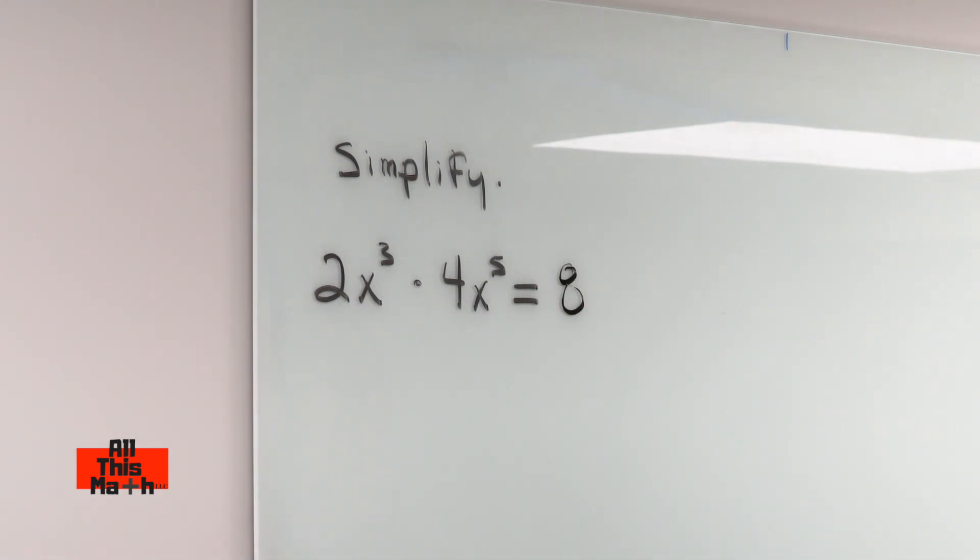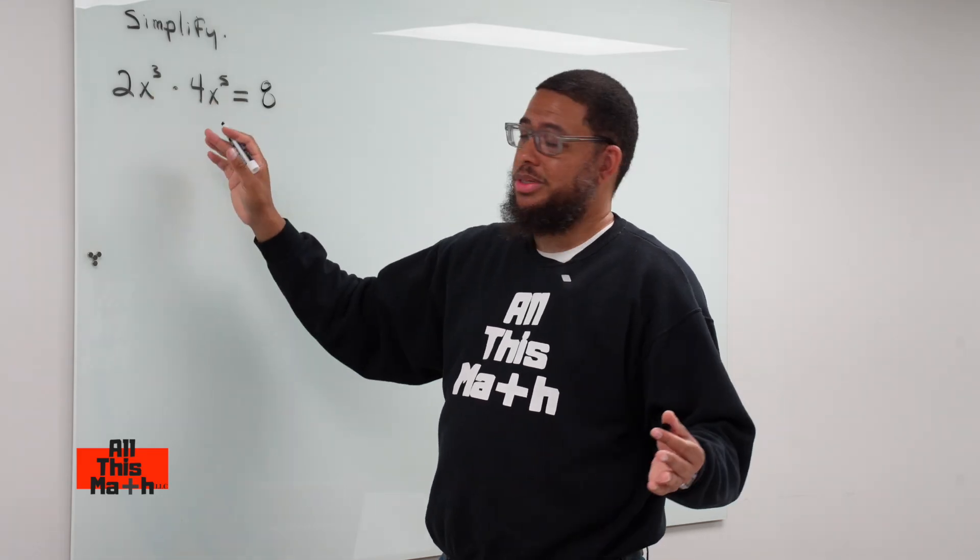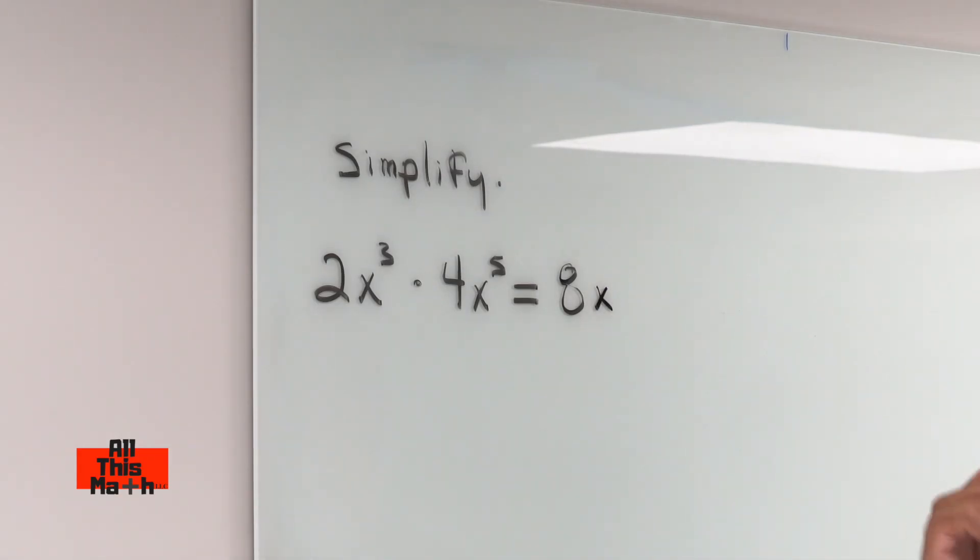And then the multiplication property for exponents says that if you have the same variable, or the same term, or even if it was a number, you write that number, term, or variable one time, and then you're going to add the exponents.